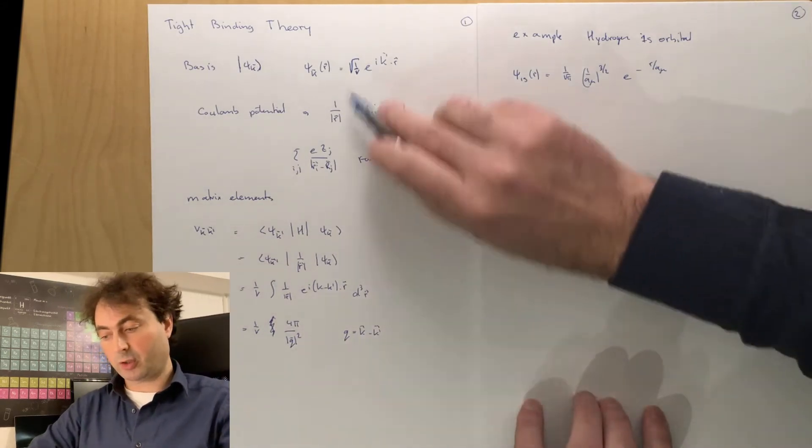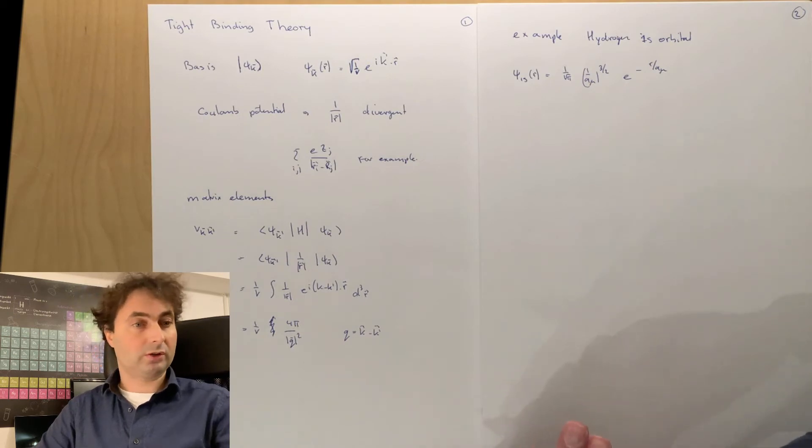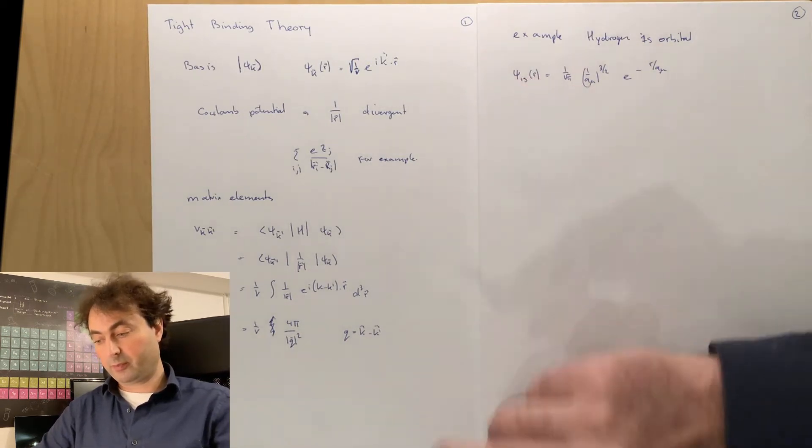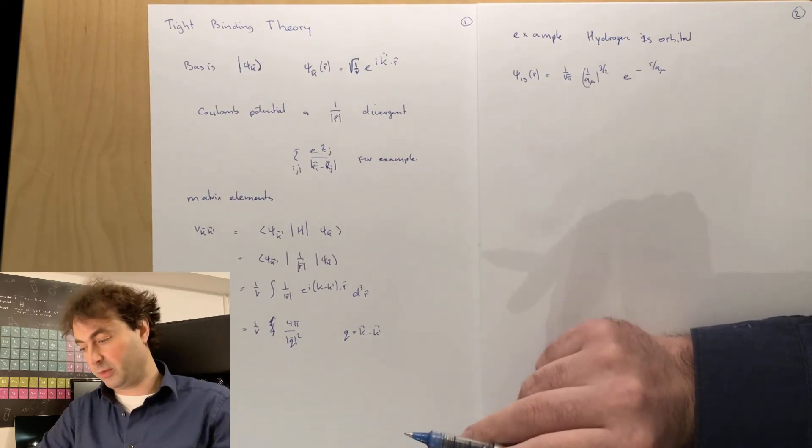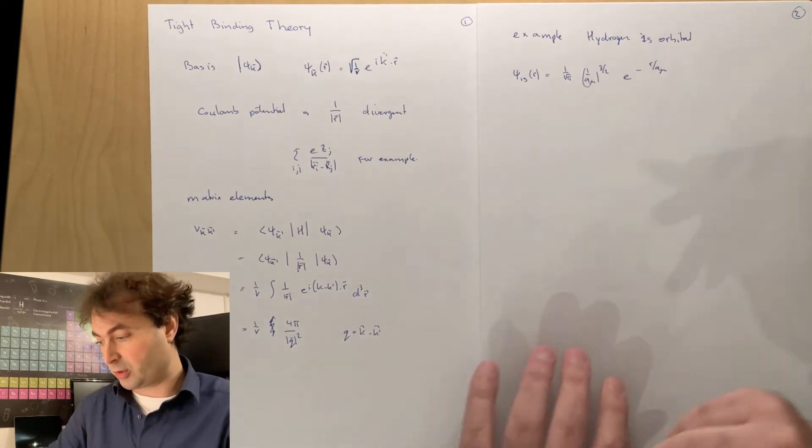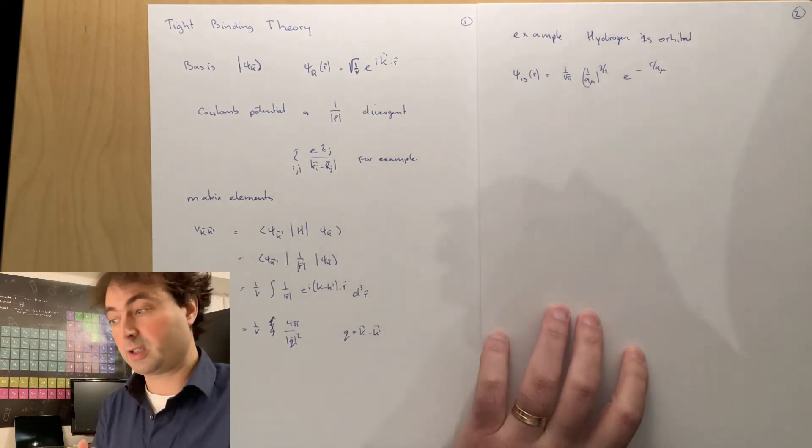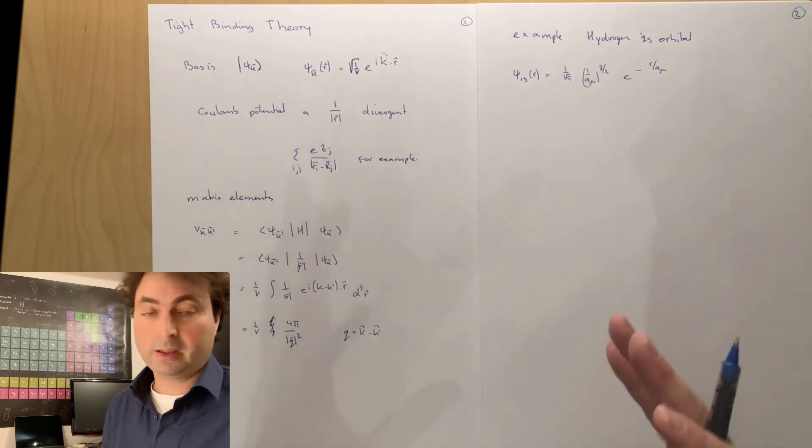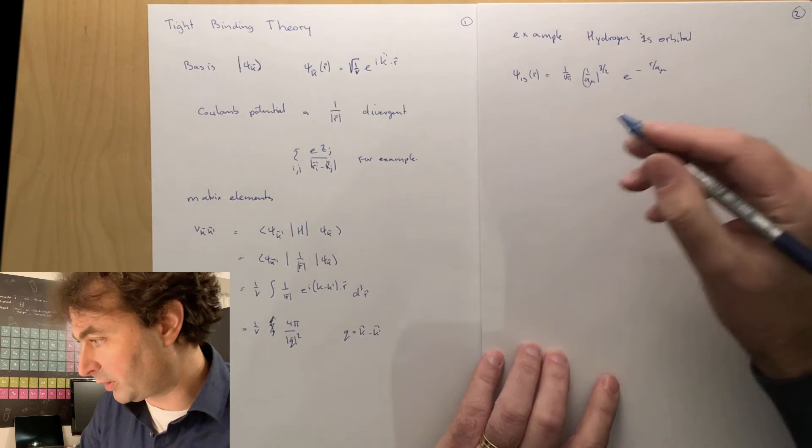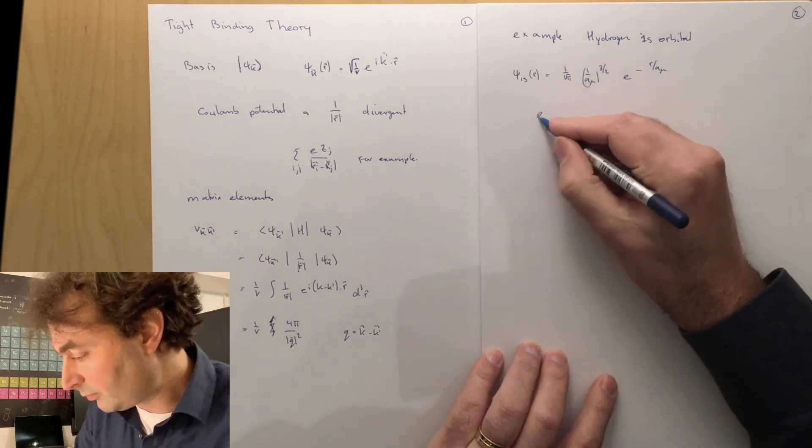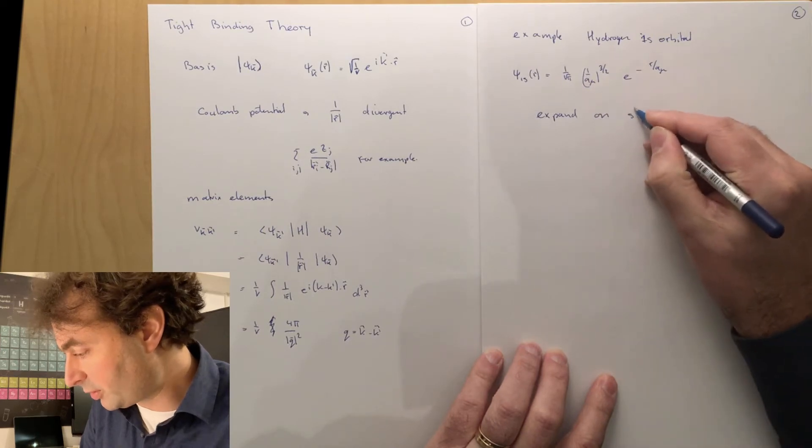Now, if you want to expand this on our plane waves, then we do not necessarily have to choose a normal coordinate system, x, y and z, Cartesian coordinate system in three different directions. We can use spherical coordinates. And in spherical coordinates, our wave function is given by a spherical harmonics in theta and phi for the angular part, and a spherical Bessel function for the radial part.